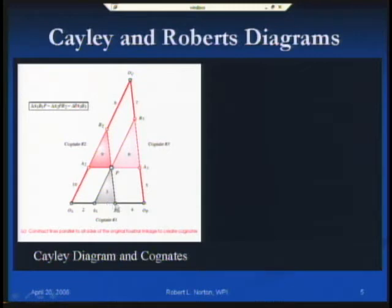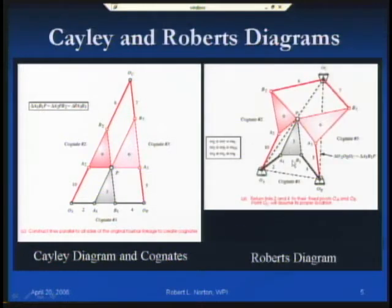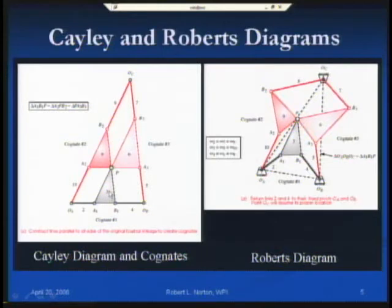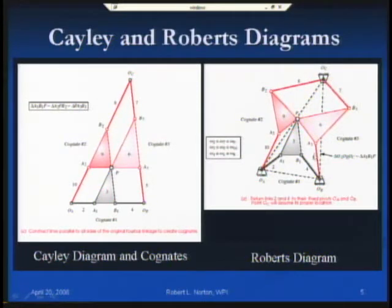Now I have all three cognates: the original was links two, three, and four — link one being the ground plane — and here we have five, six, seven, and eight, nine, ten, giving ten links total. Three four-bar linkages share one link in common — the ground plane — which reduces twelve down to ten. This is the Cayley diagram; its value is that it finds the link lengths and shapes of the couplers very easily. Now I have to put it back into the original configuration by returning OA and OB to the ground plane, giving the Roberts diagram.